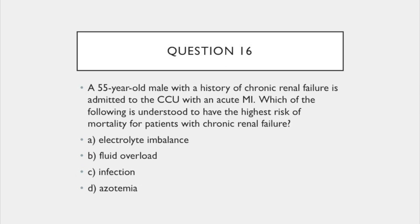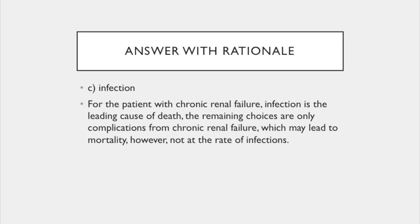Question 16. A 55-year-old male patient with a history of chronic renal failure is admitted to the CCU with an acute MI. Which of the following is understood to have the highest risk of mortality for patients with chronic renal failure? A. Electrolyte imbalance. B. Fluid overload. C. Infection. Or D. Azotemia. The answer is C: infection. For the patient with chronic renal failure, infection is the leading cause of death. The remaining choices are only complications from chronic renal failure which may lead to mortality, however not at the rate of infection.